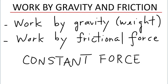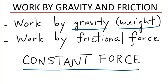In this video, we will talk about work done by two examples of constant force. These are gravitational force, or gravity, weight, and frictional force, that is, kinetic friction. When we say constant force, we are referring to a force with constant magnitude and direction. The magnitude and direction of a constant force do not change with time or coordinates.